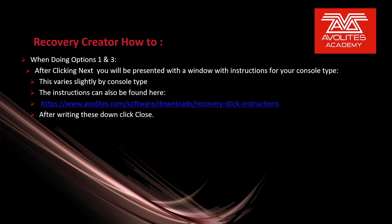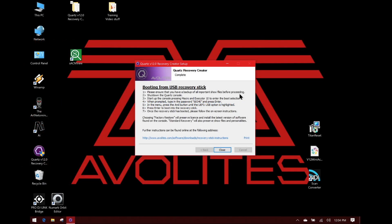As we can see, the Recovery Creator has completed. If we're doing option 1 or 3 as we just did, after clicking Next, you'll be presented with a window with instructions for your console type. This varies slightly by console type. The instructions can also be found in the Recovery Creator stick instructions. After writing these down, click Close. These would be the instructions for the Quartz, and again these can be found in the Recovery Creator stick instructions.